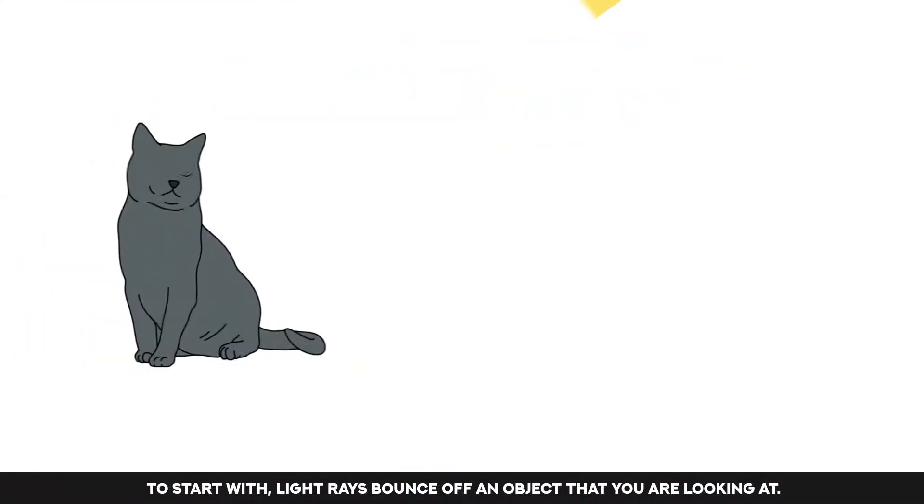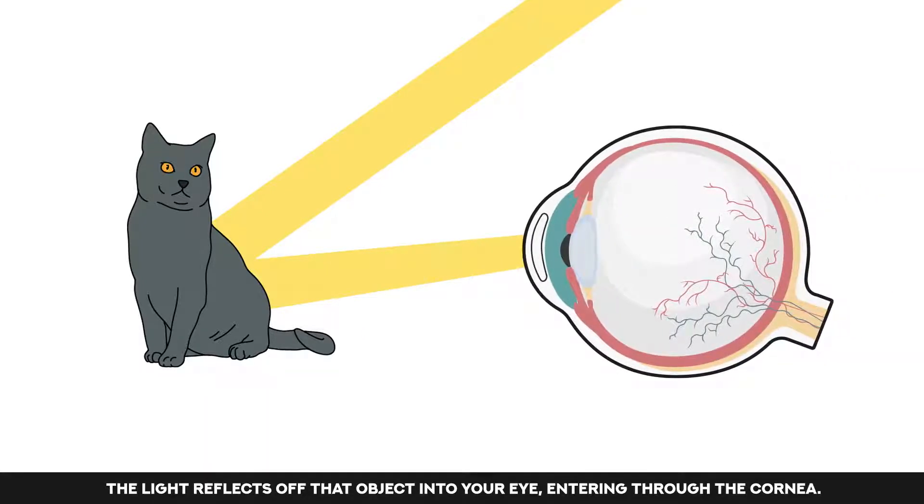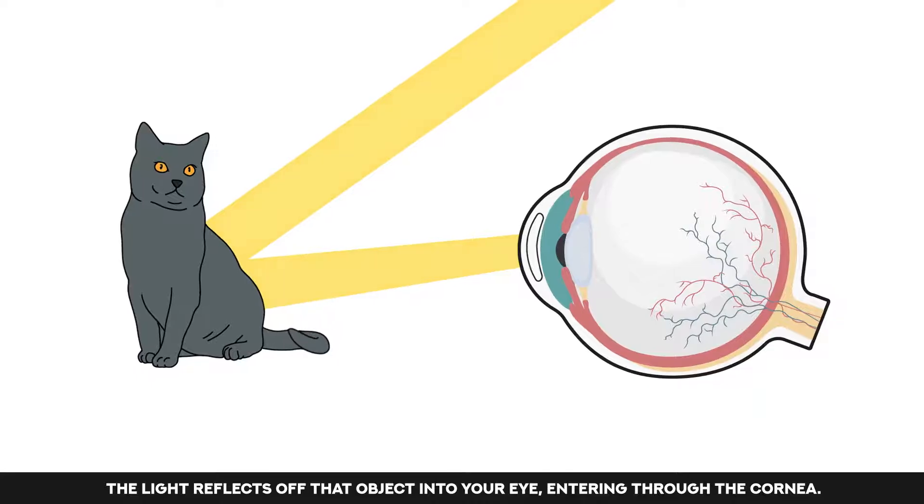To start with, light rays bounce off an object that you are looking at. The light reflects off that object into your eye, entering through the cornea.